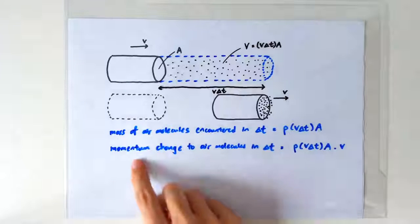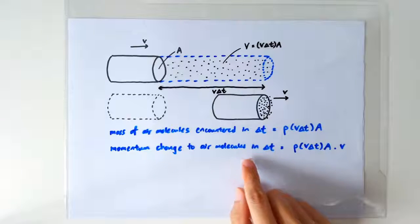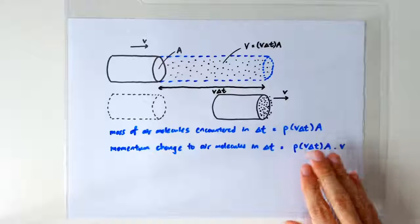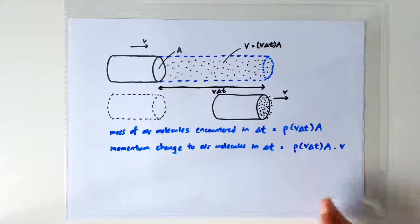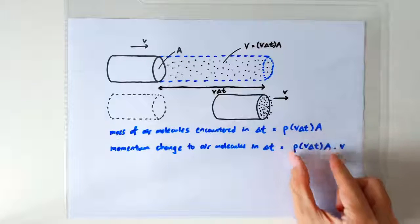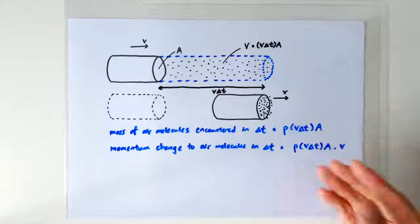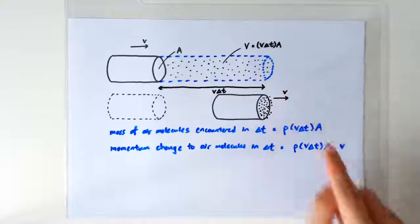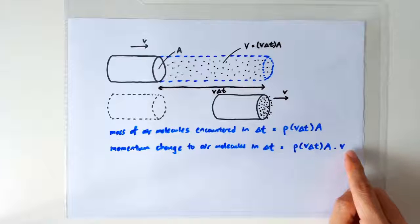So the amount of momentum change that happened in delta t would simply be mass times the change in velocity. So this is the mass of air molecules whose speed changed from 0 to V. So the change in velocity is simply V.